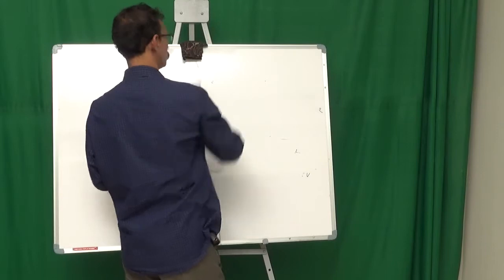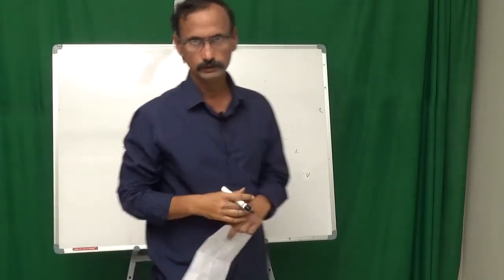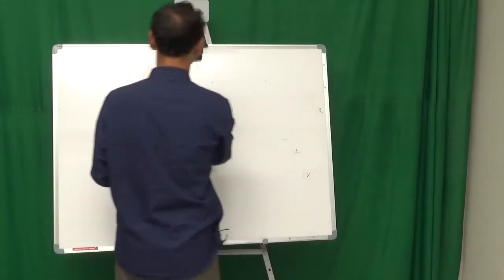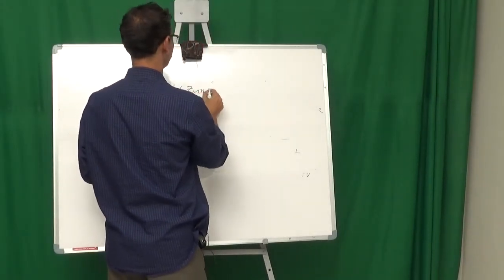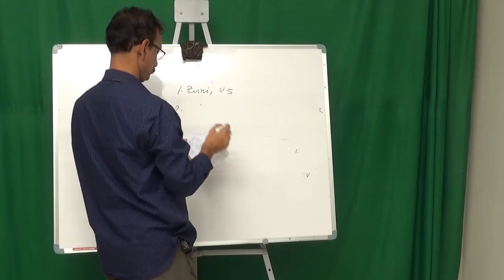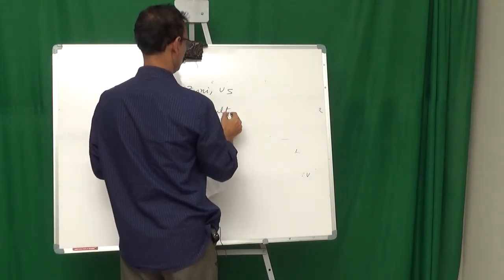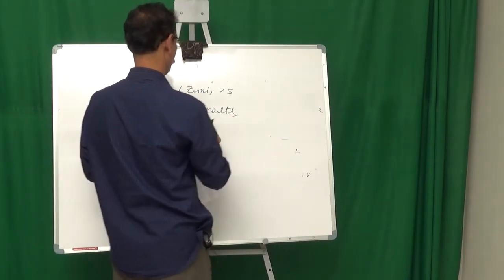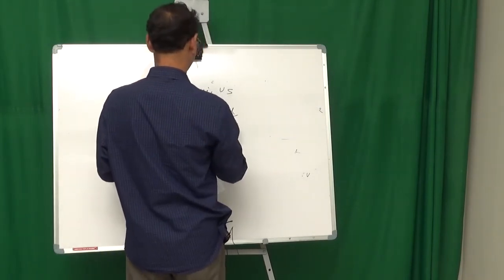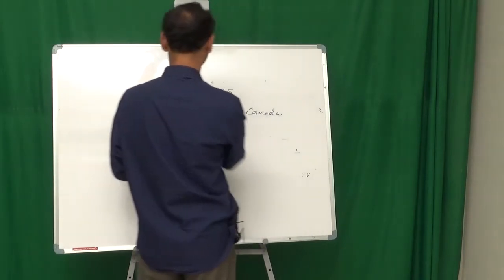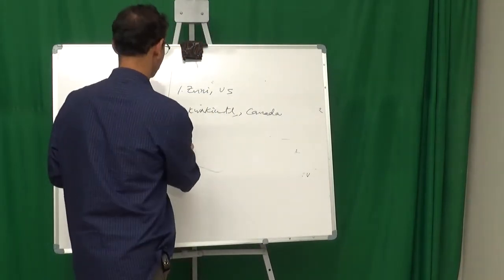In her book she mentions three societies. Zuni of U.S., Quarkite of Canada, and a third one also.